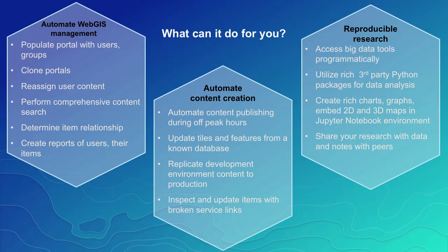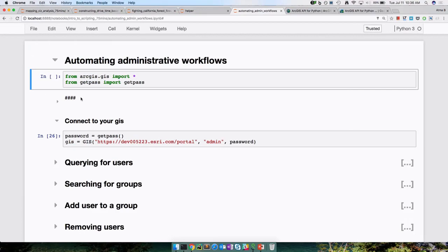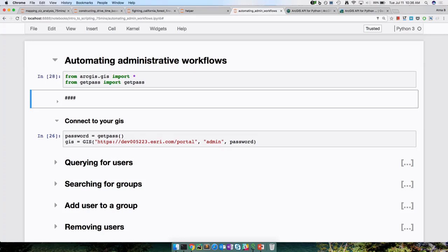Let's start with the first demo — how an administrator can make use of the Python API. This entire session is fairly basic and introductory; we have more sessions throughout the user conference going into greater detail. The first step is importing the Python library and making a connection to my ArcGIS Enterprise. Here I want to search for my users — I just query GIS.users.search.